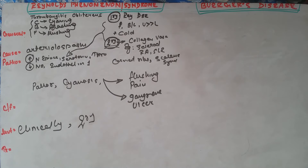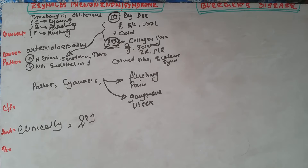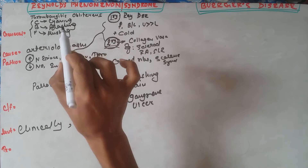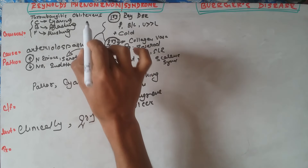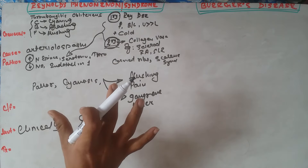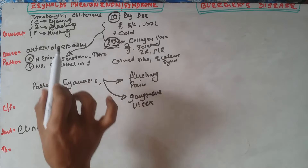In this section we will relatively correlate between Raynaud's phenomenon and Buerger's disease. Raynaud's phenomenon is usually due to arterial spasm in the distal portion of the limb. The most commonly affected limb is the lower limb. There are three triad features which should be remembered as the clinical presentation.